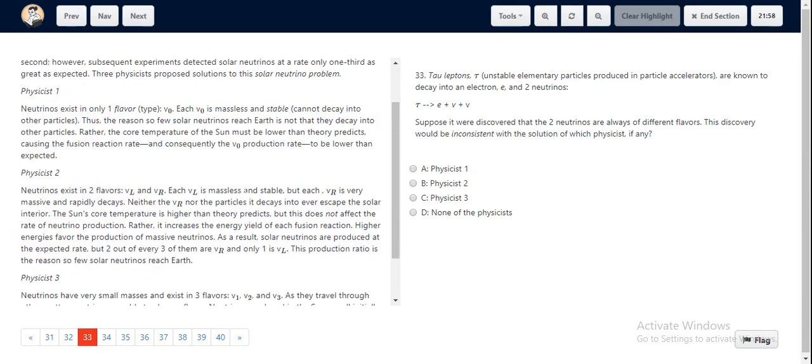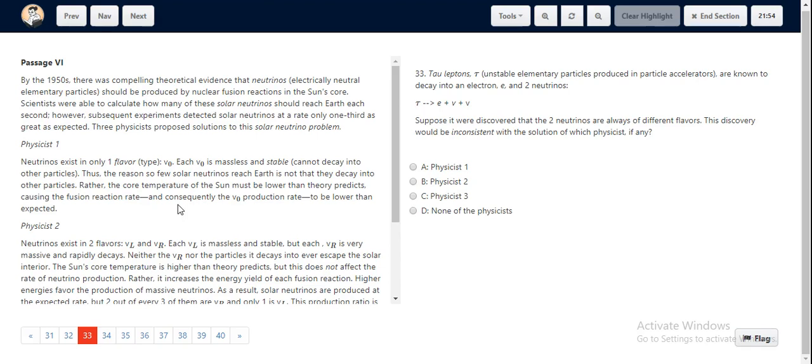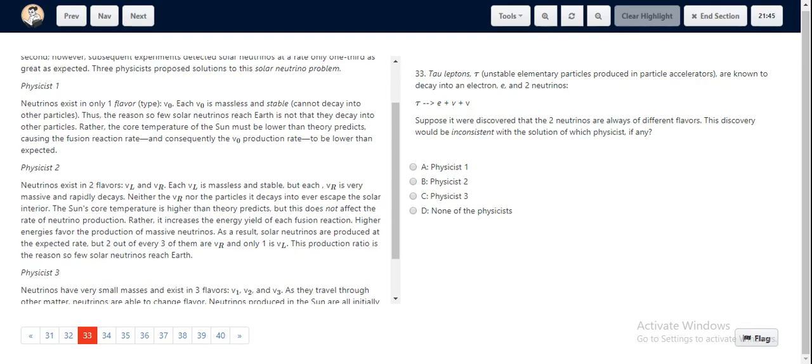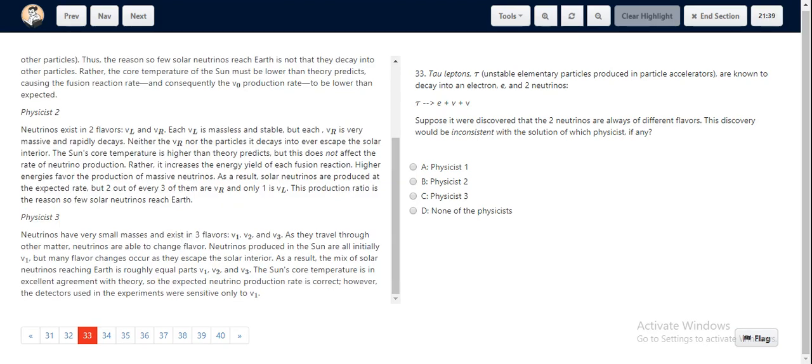For question 33, we again look at all the theories mentioned earlier. Physicist 1 states that there is only a single flavor of a neutrino that exists, which is V0. Physicist 2's theory suggests that there are two flavors, VL and VR. Physicist 3's theory suggests that there are three flavors: V1, V2, and V3.